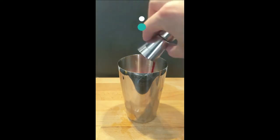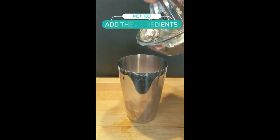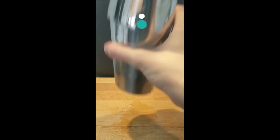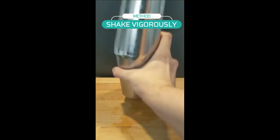Start off by adding ice to your cocktail shaker, then follow up by adding your ingredients, your Apple Jack, your lemon juice, and your grenadine, and then give it a vigorous shake.